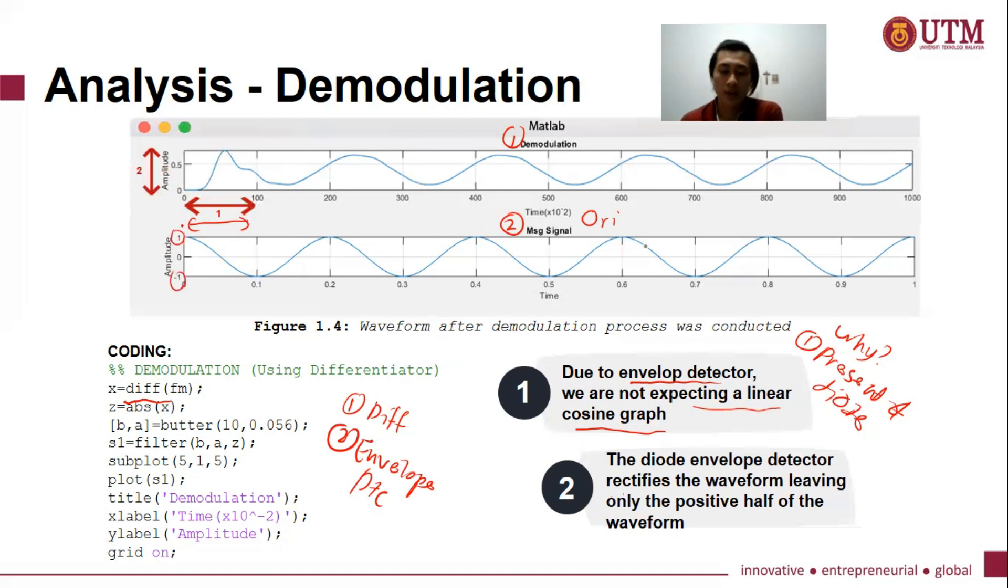So let's look at the number two, the diode envelope detector rectifies the waveform, leaving only the positive half of the waveform. So this is another way where the diode affects the waveform, where we will have the positive half of the waveform only.